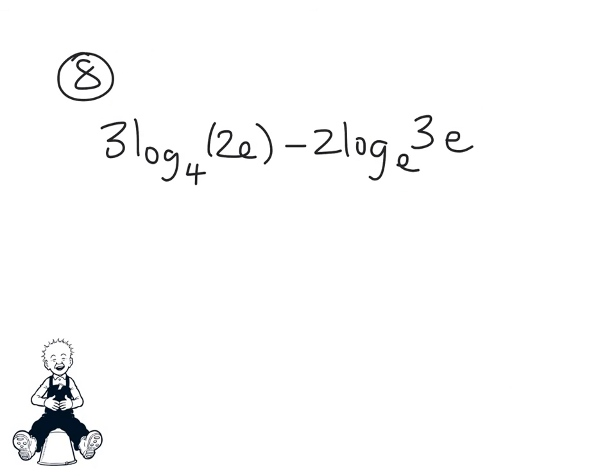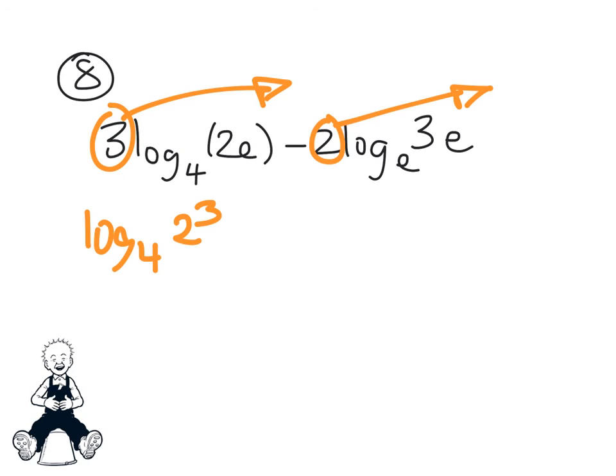Then lastly, number 8. How are we going to go about simplifying this thing here? Well, the first thing is to get the 3 up to the top, get the 2 up to the top. So we've got log to the base 4 of 2 to the power 3, e to the power 3, take away log to the base e, 3 to the power 2, e to the power 2.